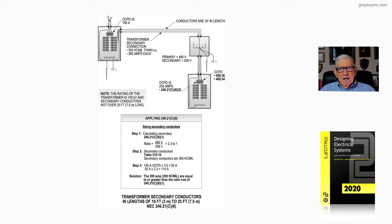Now, we take 50 amp times the ratio of 2.3. We come up with 115. We have to be equivalent to that or larger. So we have 285 amps, 300kCM LTHWN are equal to or operate greater than the ratio of 240.21C6 item one.